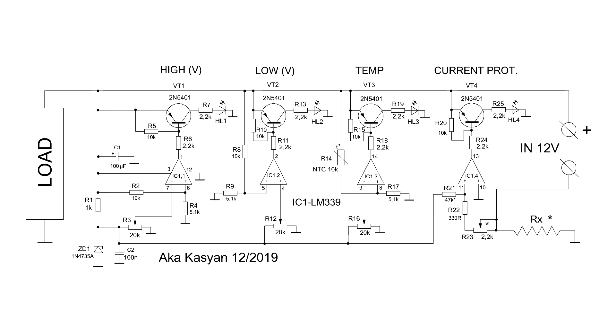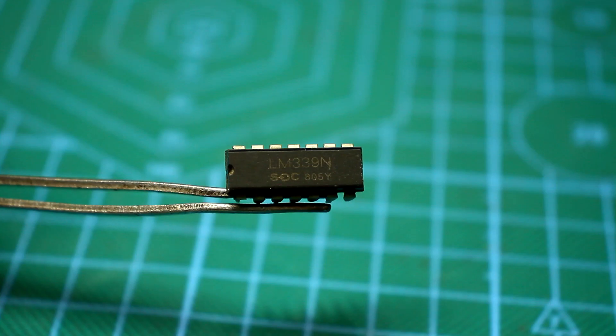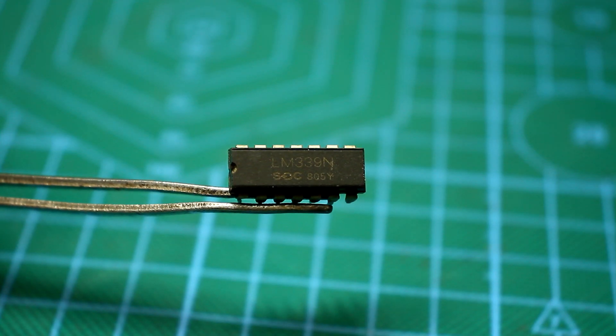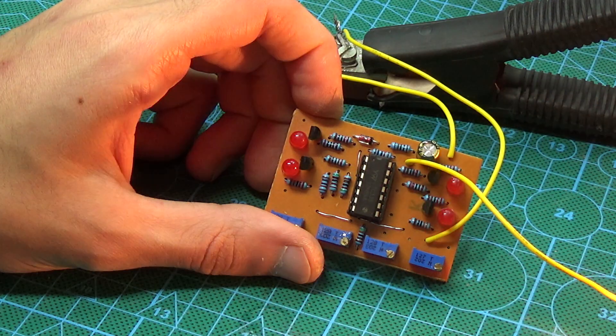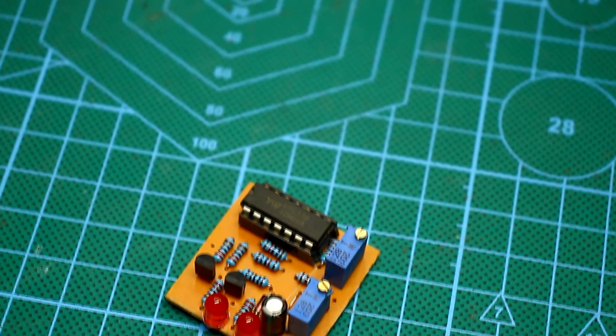The whole circuit is assembled on one comparator LM339. It has four independent channels, and in the mentioned video, I used only two. On them, as already said, protection against increased and reduced supply voltage is built.